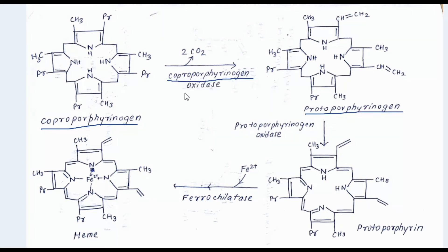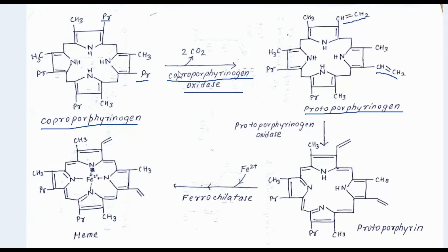Coproporphyrinogen is then converted to protoporphyrinogen by the enzyme coproporphyrinogen oxidase. In this step, two adjacent propionyl groups (3 carbons) are converted to vinyl groups (2 carbons), with liberation of two molecules of carbon dioxide — one from each of the two propionyl groups.